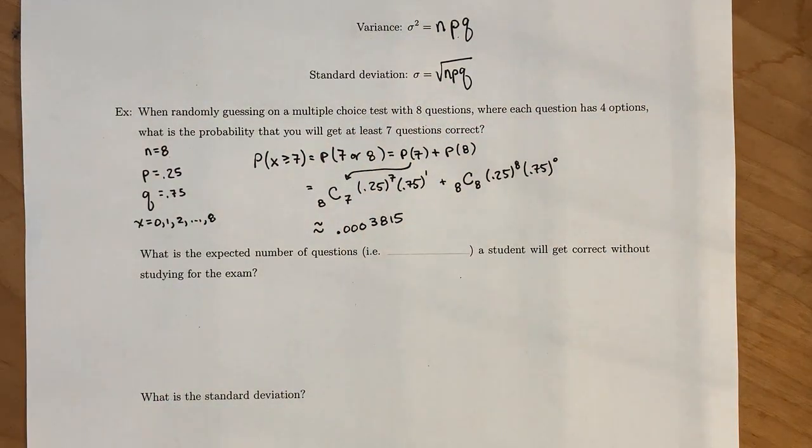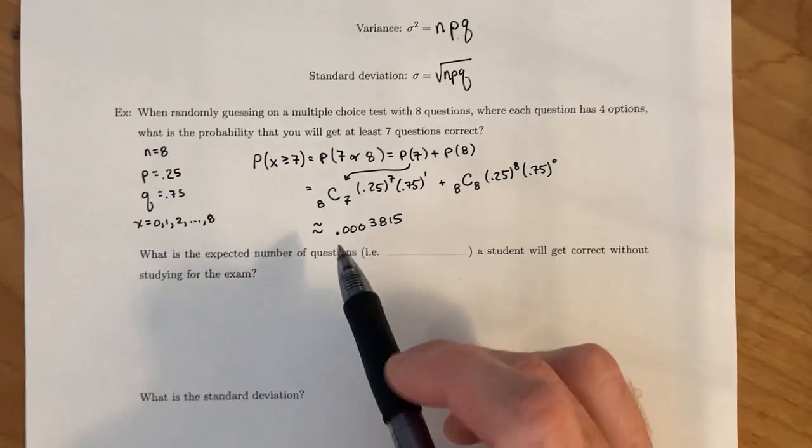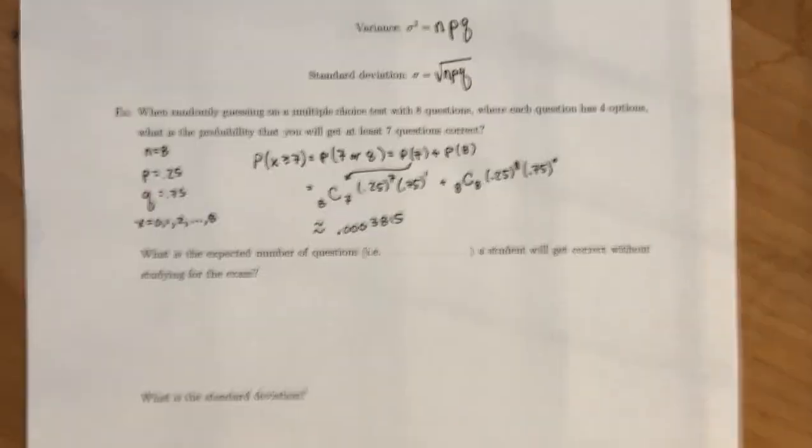So, if you just walk right into this test, not studying at all, and just guessing at whatever answers you think, you just fill in the bubble sheet, or the Scantron, just complete random answers, the probability of getting 7 or 8 of those questions correct is very, very low. It's less than 1%.